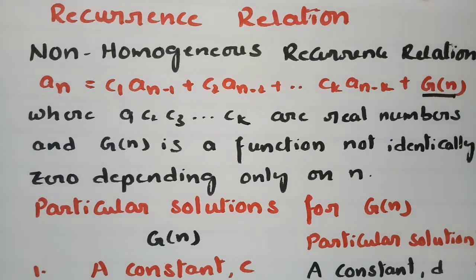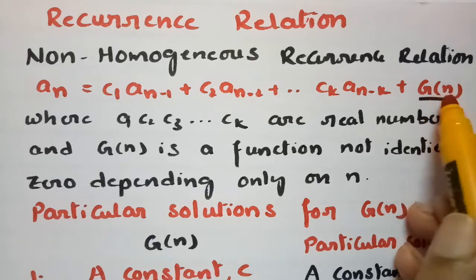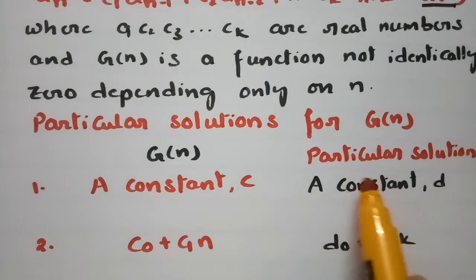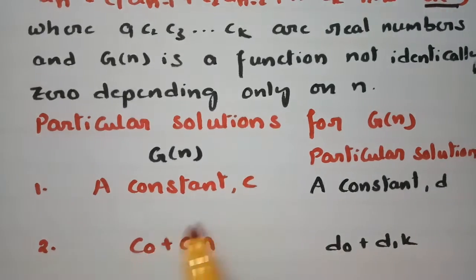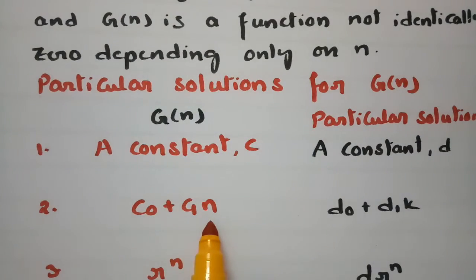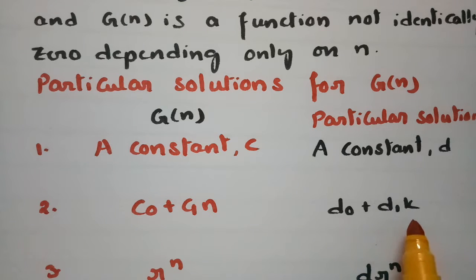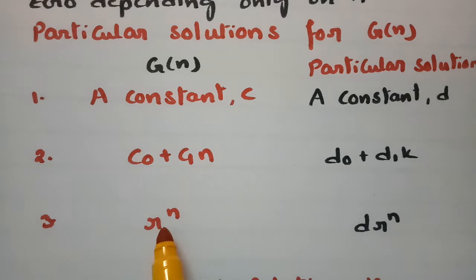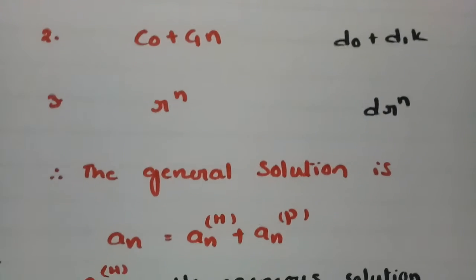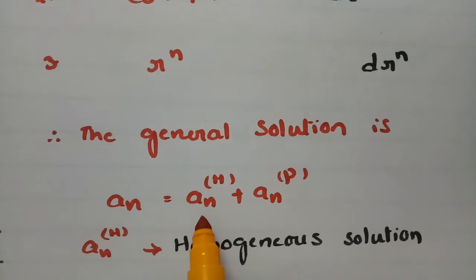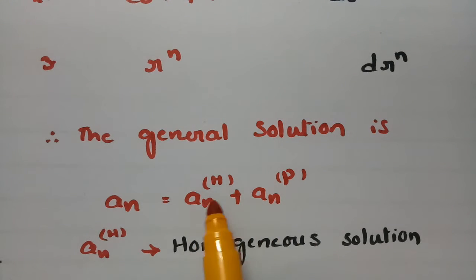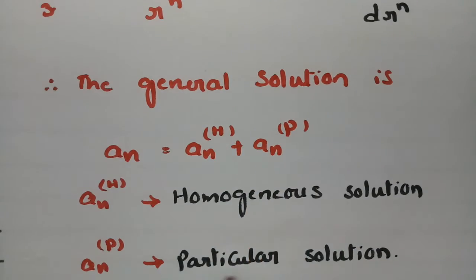In my earlier videos I explained how to find the homogeneous solution. In today's video I am discussing the particular solutions for g(n). If g(n) is a constant c, the particular solution assumption is d. If g(n) = c0 + c1·n, we assume d0 + d1·k. If g(n) = r^n, we assume d·r^n. The general solution is a_n(h) + a_n(p), where a_n(h) is the homogeneous solution and a_n(p) is the particular solution.